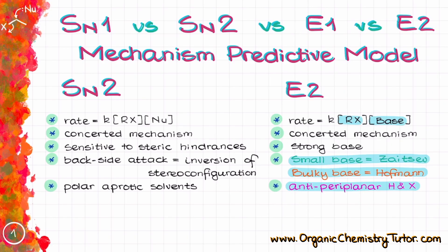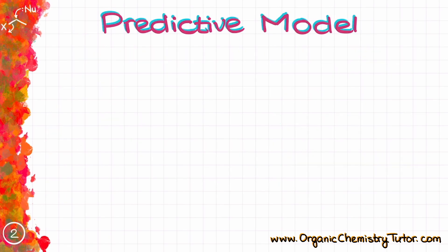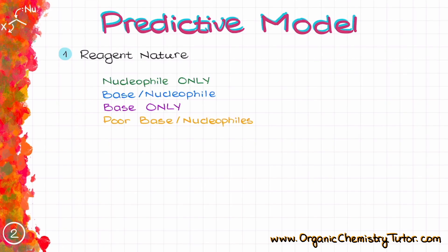Now when we have refreshed the substitution elimination reactions, let's dive into the predictive model itself. The predictive model I propose here is based on a three-step approach. First, we're going to assess the nature of our reagents. Our reagents are going to fit into four categories: they can be nucleophiles only, nucleophiles or bases, bases only, and poor base and nucleophiles.